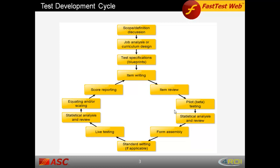The test development cycle. Many factors go into the development of a quality testing program. These include scope and definition, job analysis or curriculum design, blueprint test specifications which are built into your item banks, and item writing and review, which is determined by user roles set up in the workflow and can be tracked throughout the process.